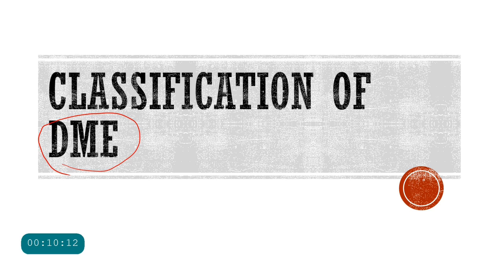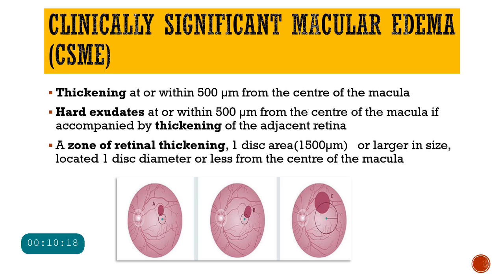Now, regarding classification of diabetic macular edema — the first very important clinical term is clinically significant macular edema, also referred to as CSME, given by the ETDRS study. For CSME to be present, any one of three parameters must be satisfied.